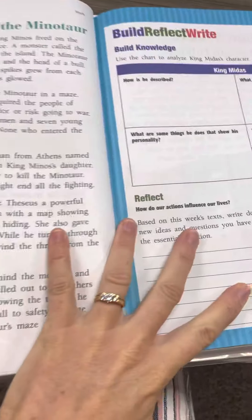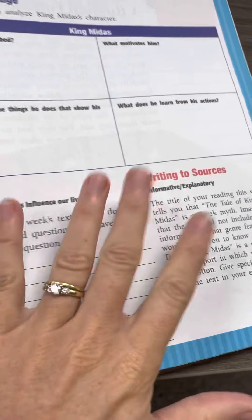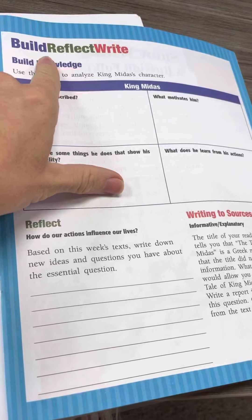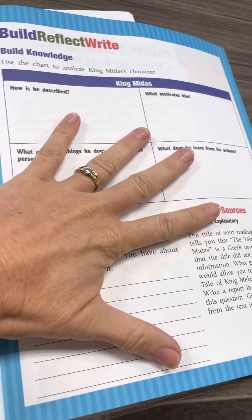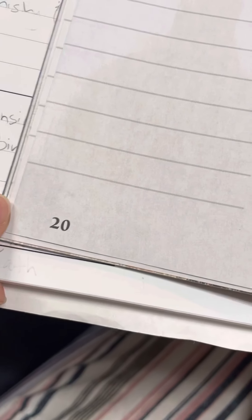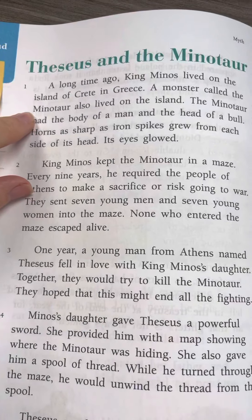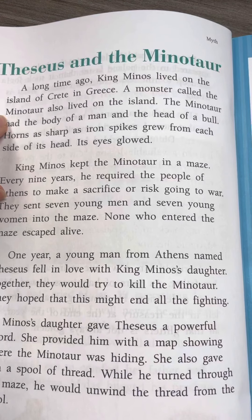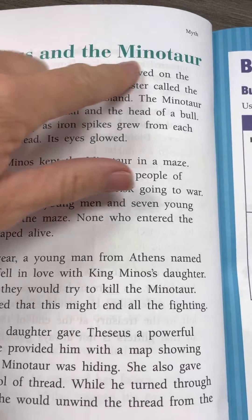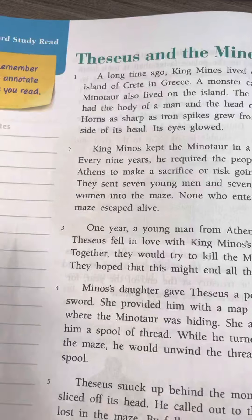It looks like this. We're not going to do this one because we've already talked about King Midas — this is all King Midas, we've done it a different way. We're going to read this page. This is page 20: Zeus and the Minotaur. Whoa, cool words.